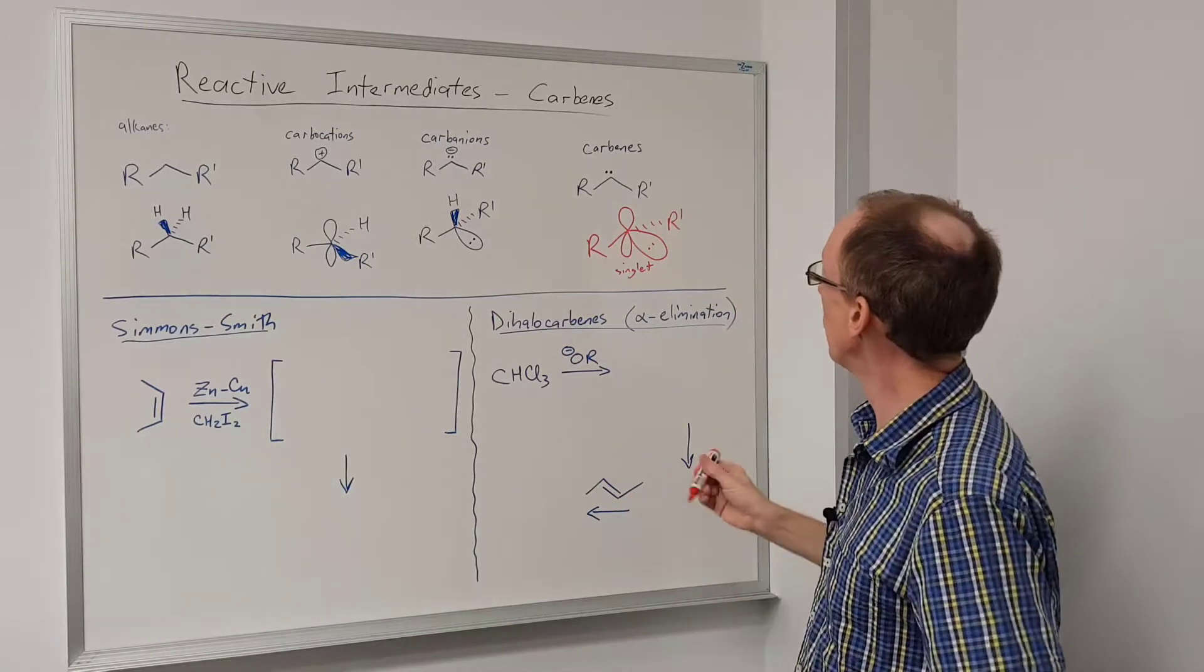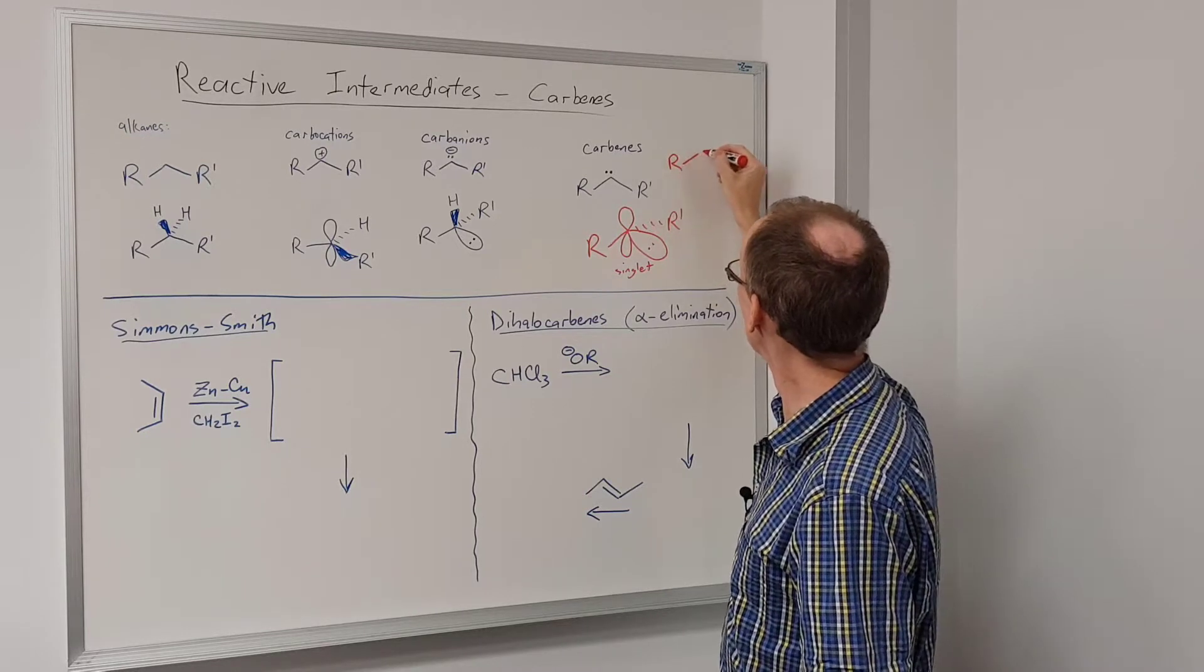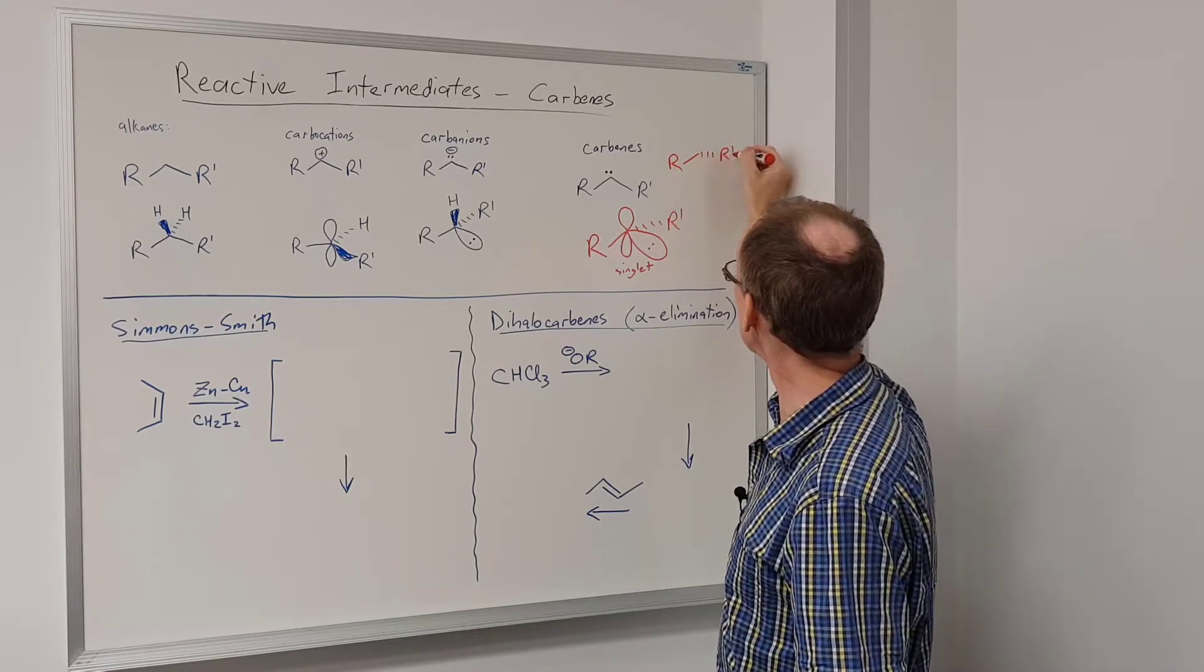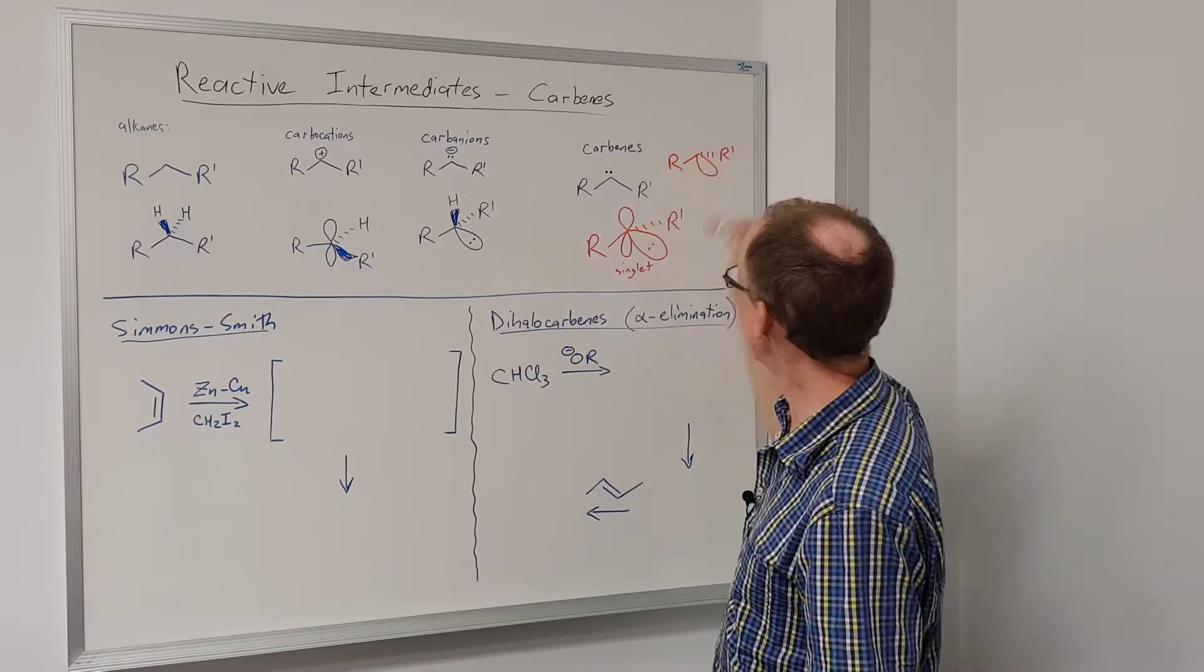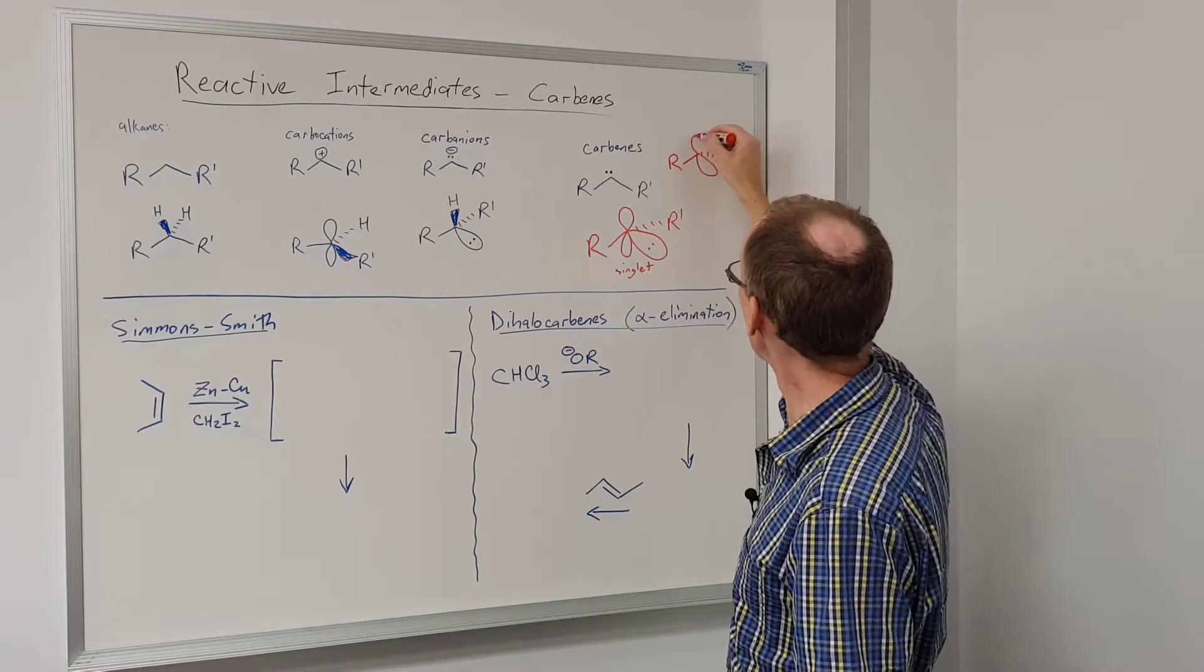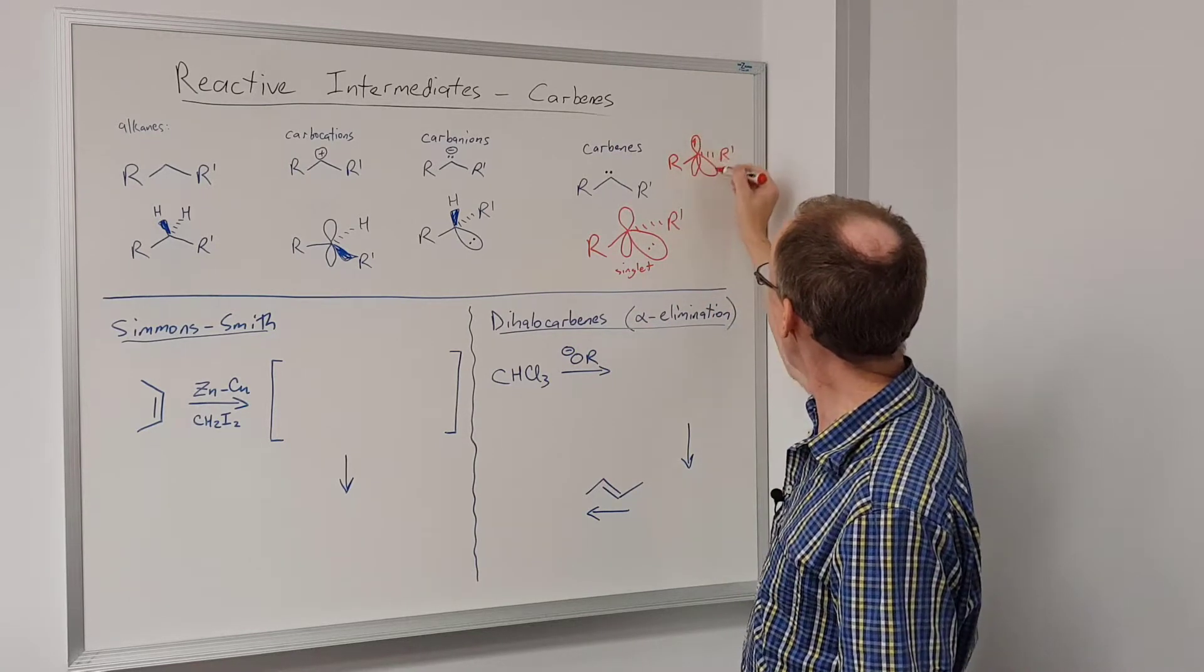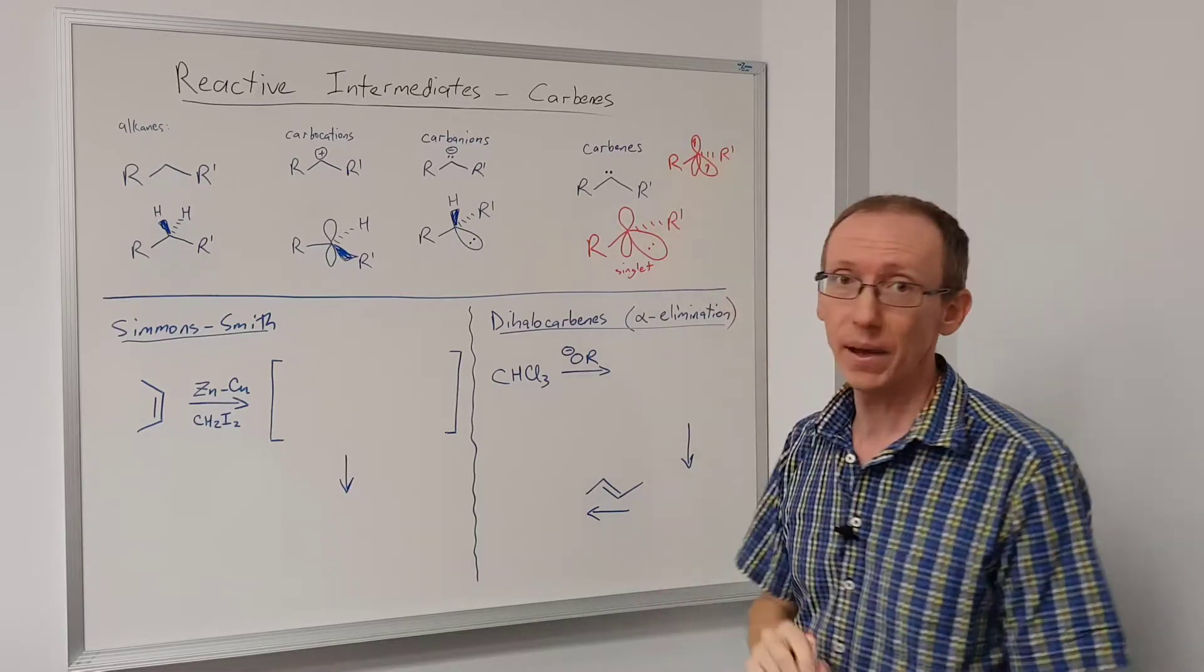The other form it can take or other type of carbene is what we call a triplet carbene. That would look like this where we still have the same sp2 hybridized orbital. We also have a p orbital but each one of these has one unpaired electron.